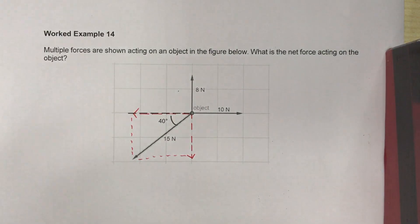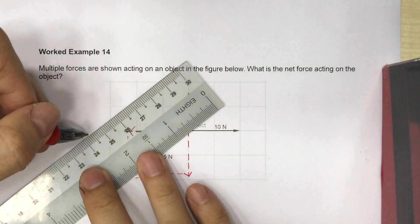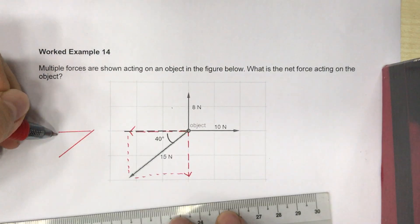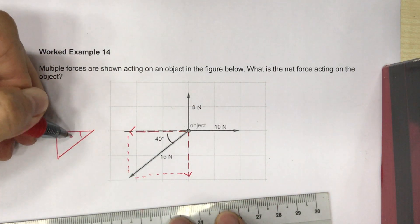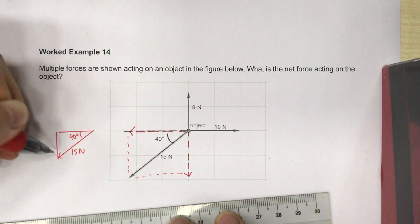You can see that these two vectors form the sides of a rectangle because they are perpendicular to each other. So you can actually represent the 15N force as the hypotenuse of a right angle triangle with the angle 40 degrees between the hypotenuse and the adjacent.